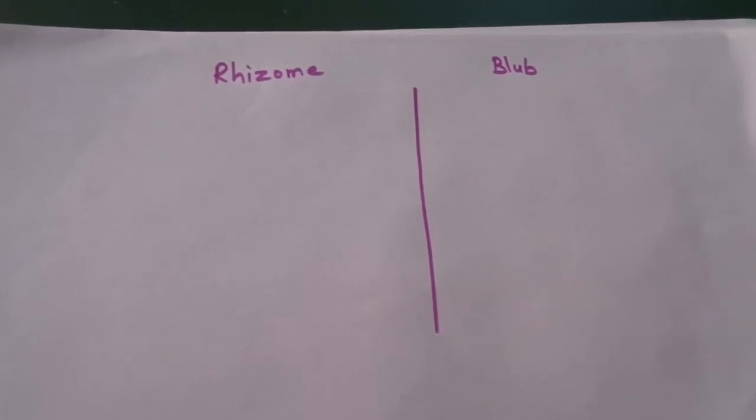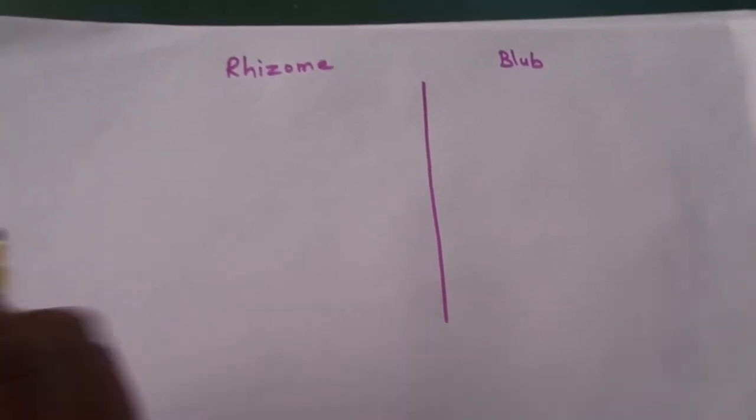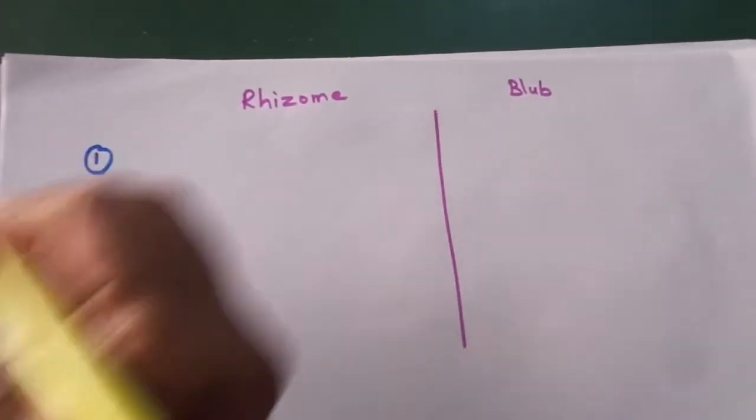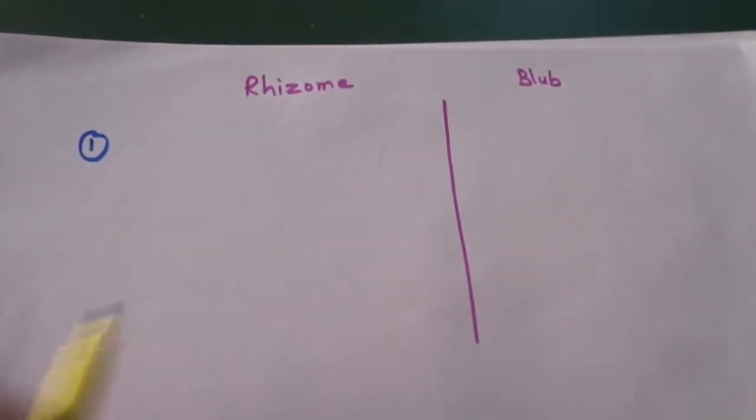In the present video, I will be covering the difference between the rhizome and the bulb. As we all know, both this rhizome as well as the bulb, these are the modification of stem.